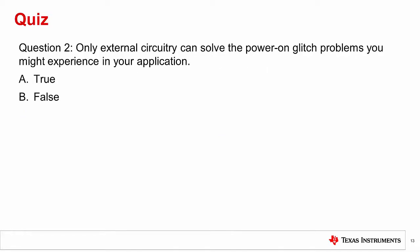Question 2: True or false? Only external circuitry can solve the power-on glitch problems you might be experiencing. The answer is false. The best solution for power-on-glitch is device selection. TI has spent a lot of effort to improve power-on-glitch in its DAC products. Good part selection in glitch-critical applications can reduce the risk of problems.